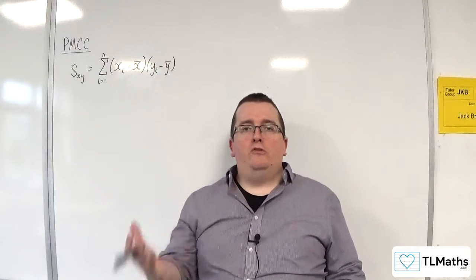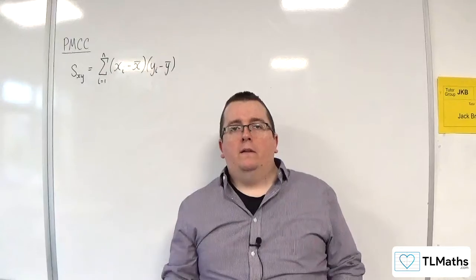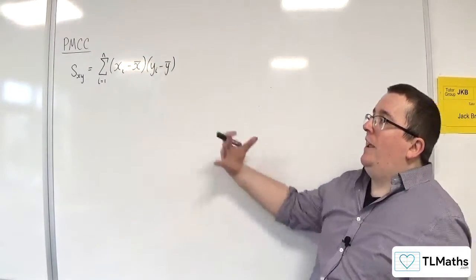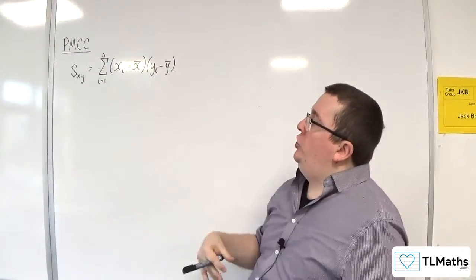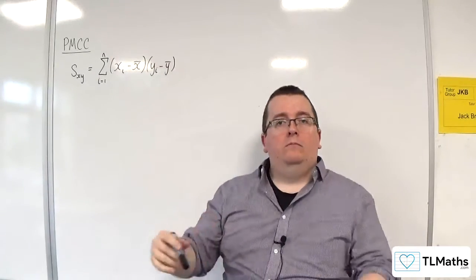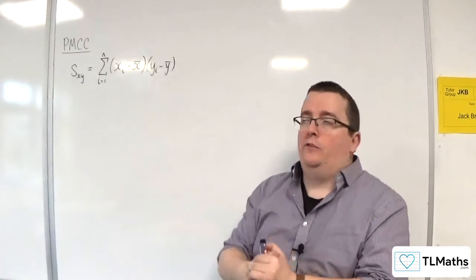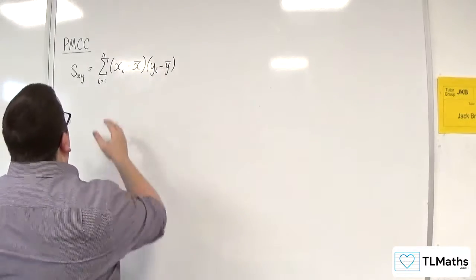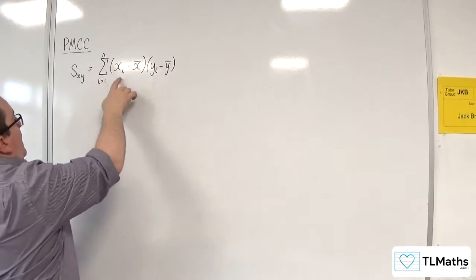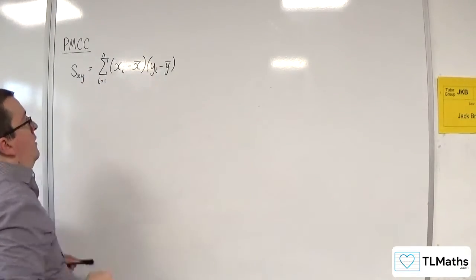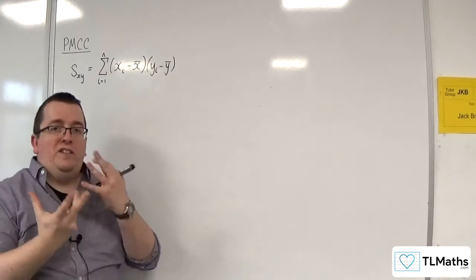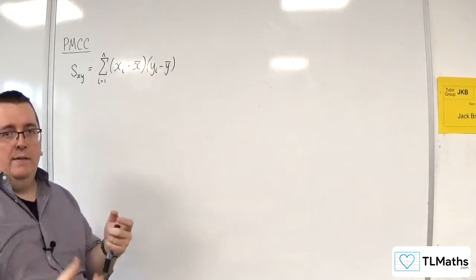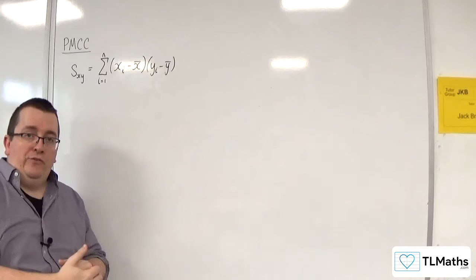In the previous video, when we were deriving the product moment correlation coefficient, I introduced S_xy, which when we write the limits either side — top and bottom — of the summation symbol looks like this: the summation from i=1 to n of (x_i minus x̄) times (y_i minus ȳ). So each of the data points is (x_i, y_i) from i=1 up to n, where there are n bits of data.